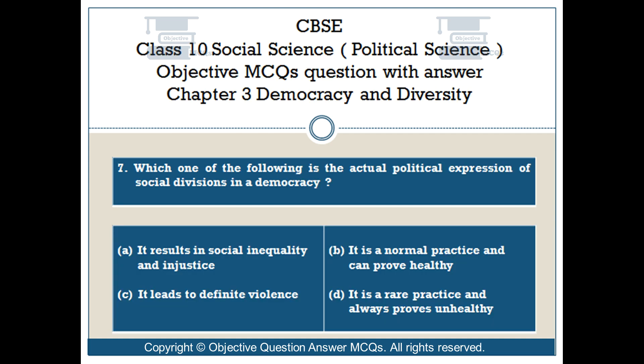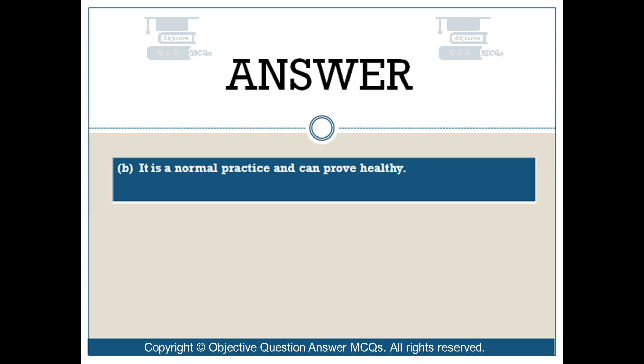Question number 7. Which one of the following is the actual political expression of social divisions in a democracy? Option A: It results in social inequality and injustice. Option B: It is a normal practice and can prove healthy. Option C: It leads to definite violence. Option D: It is a rare practice and always proves unhealthy. The right answer is Option B — It is a normal practice and can prove healthy.